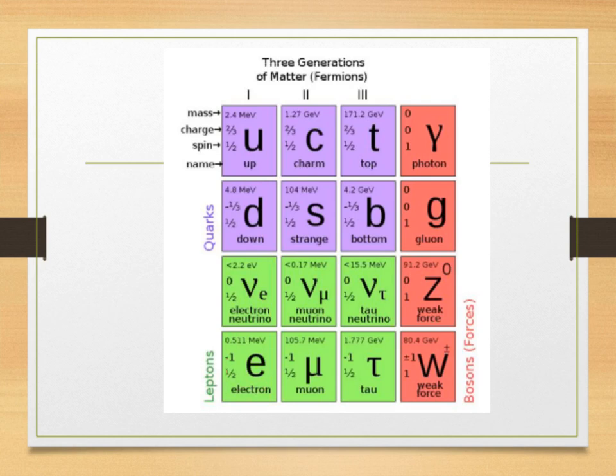Finally we have our bosons, or our force carriers. Our photon which is our light, our gluon, our weak force and our secondary weak force. We also have another fundamental particle known as the Higgs boson, which we will look at briefly.